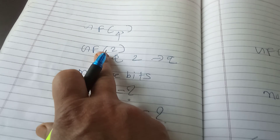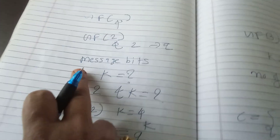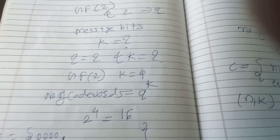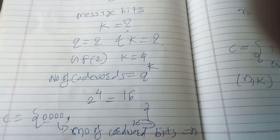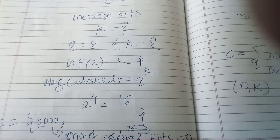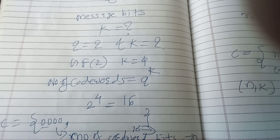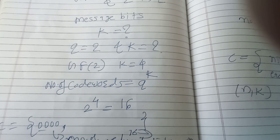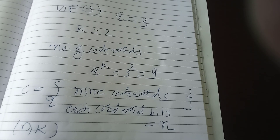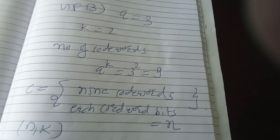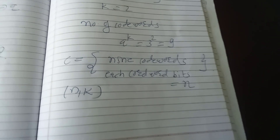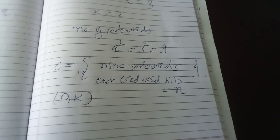To summarize: the Galois field number is called q, the number of message bits is k, and the number of code words you will get is q raised to k. If q=2 and k=4, then the number of code words is 16. The number of bits in each code word is decided by n. Another example: field q=3, k=2, then the code set has 3 raised to 2 — that is 9 code words — and the number of bits in the code word equals n.